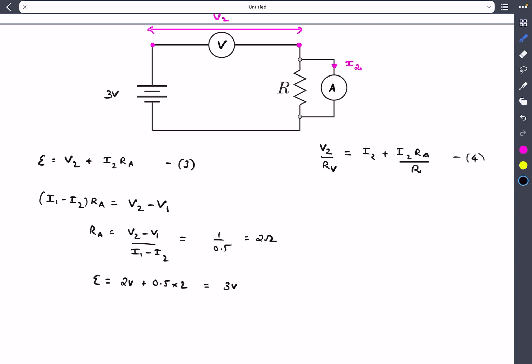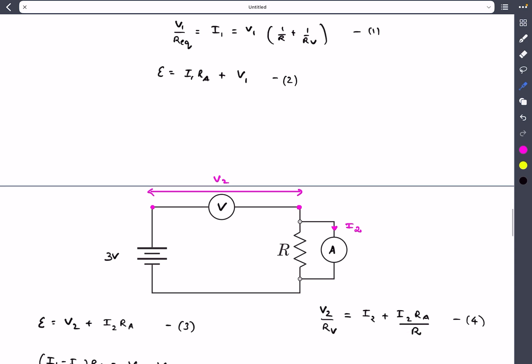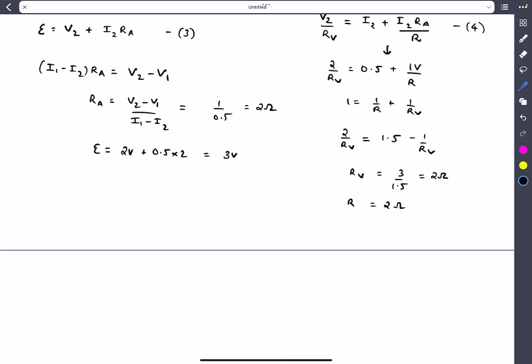Let's call this equation four. If you observe equation one, the variables are R and Rᵥ, and equation four also has variables R and Rᵥ. So we can simultaneously solve them and obtain the value of both R and Rᵥ as well.